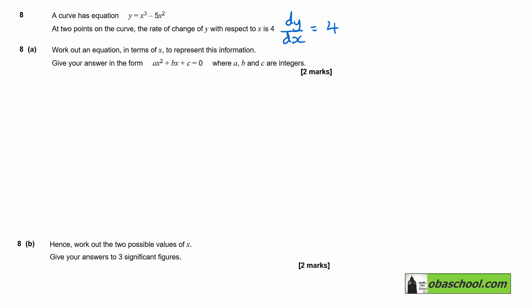Work out an equation in terms of x to represent this information. Give your answer in the form ax squared plus bx plus c equals 0, where a, b, and c are integers.